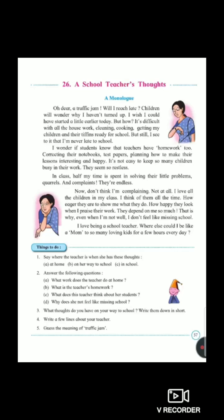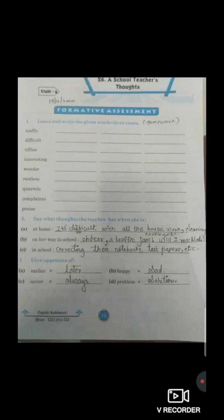So students, now the reading part I had completed. Now everyone just open your combined book number 3 — I am going to give you the notes. So now students, this is combined book number 3, page number 15, unit 3, chapter number 26, 'A School Teacher's Thoughts.' The very first question: learn and write the given words 3 times. So students, let's see which are those words.